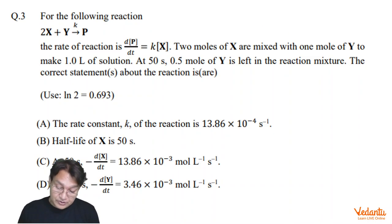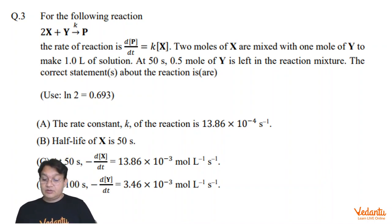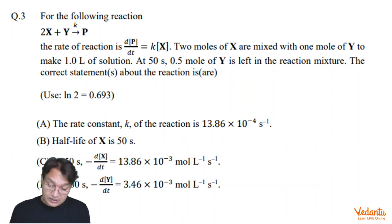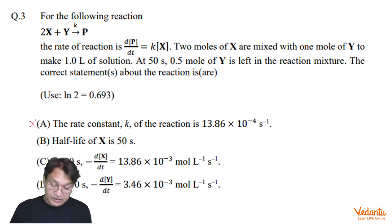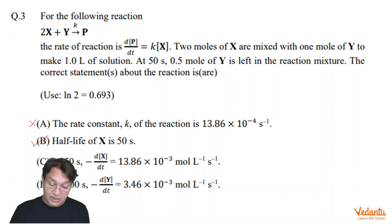Looking at the options: the rate constant k given as 13.86 × 10⁻⁴ — that is a wrong statement, so option A is incorrect. The half-life is indeed 50 seconds — no doubt about that, because the concentration reached half its value in that time.